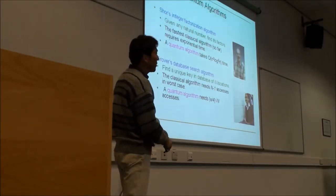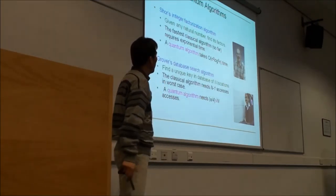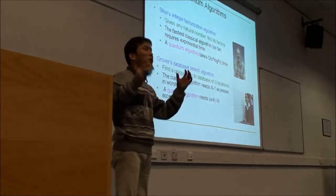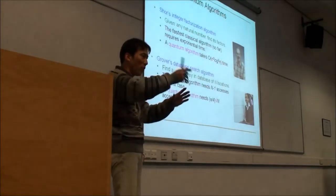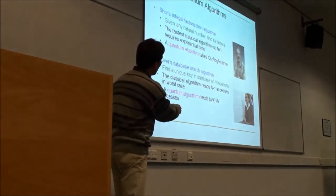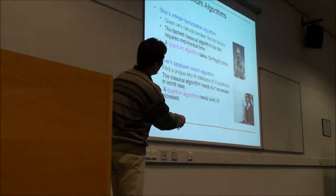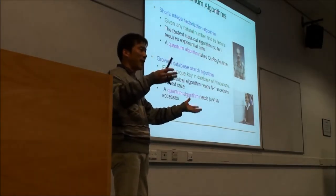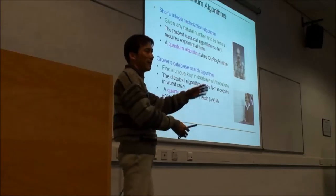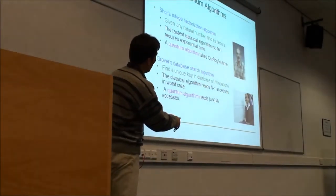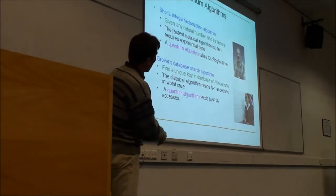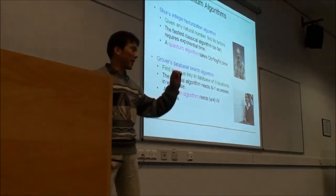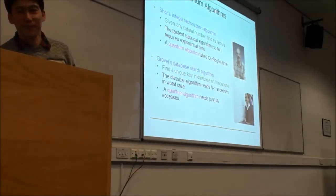Another famous one is the database search. Suppose we have n locations and there is a unique key hidden somewhere, and the database is unstructured. In the classical sense, in the worst case, we have to open n-1 boxes. If all n-1 boxes are empty, the key is in the last one. In a quantum algorithm — Grover's algorithm — we only need roughly the square root of n operations to find the key. It's really fast.